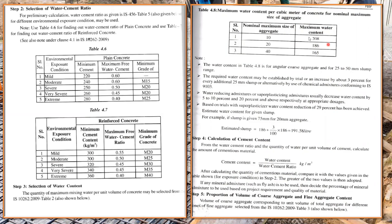The water content values in Table 4.5 are for angular coarse aggregate with a slump range of 25 to 50 mm. If your required slump is greater — say 100 mm — you cannot use these values directly. A correction is needed: increase the water content by about 3% for every additional 25 mm of slump beyond 50 mm, or alternatively use chemical admixtures conforming to IS 9103.